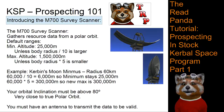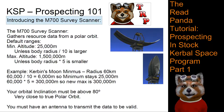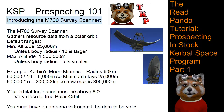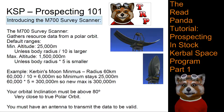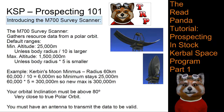First of all, let's introduce the M700 Survey Scanner. It's the basic scanner, introduced in version 1.0 of KSP, and it is designed to gather data from a polar orbit. It has a deployed and non-deployed form, as you can see here to the right of the slide. When not deployed, it's a fairly narrow object that fits nicely on the end of a 1.25 fuel tank, and it fits easily within a 2.5 meter profile.